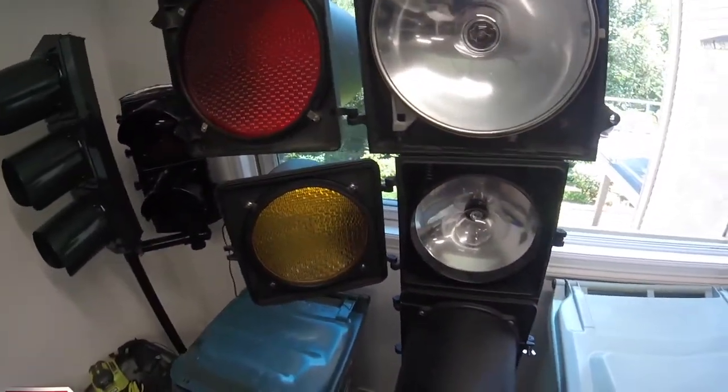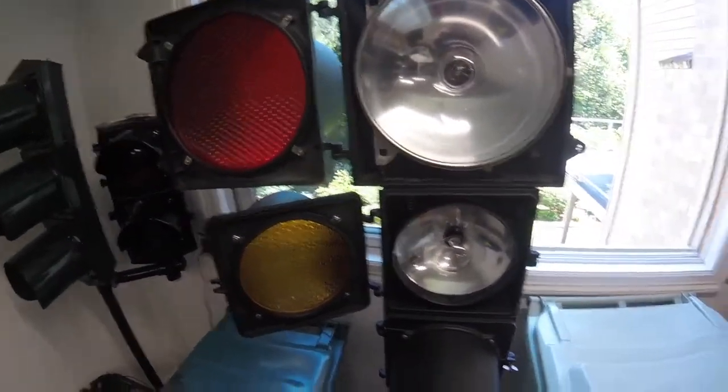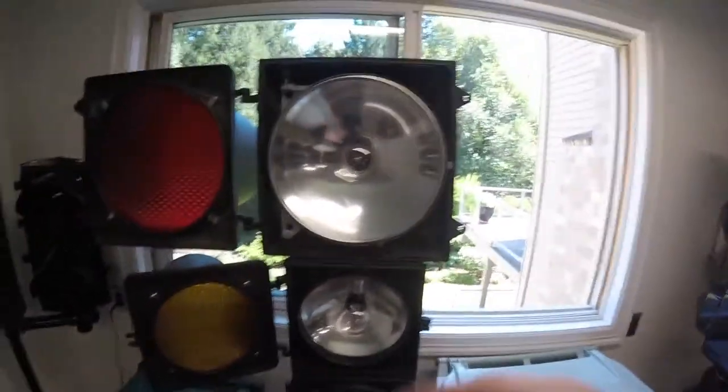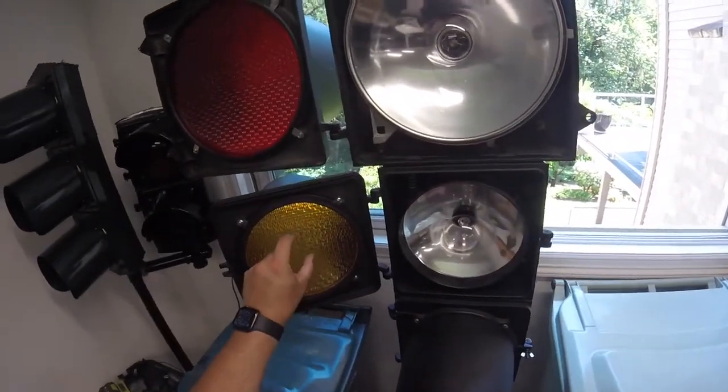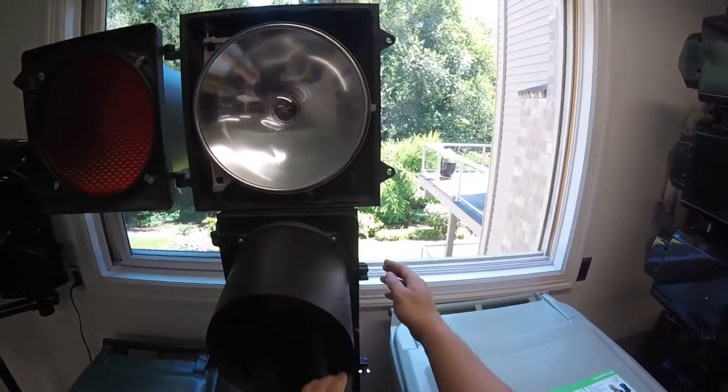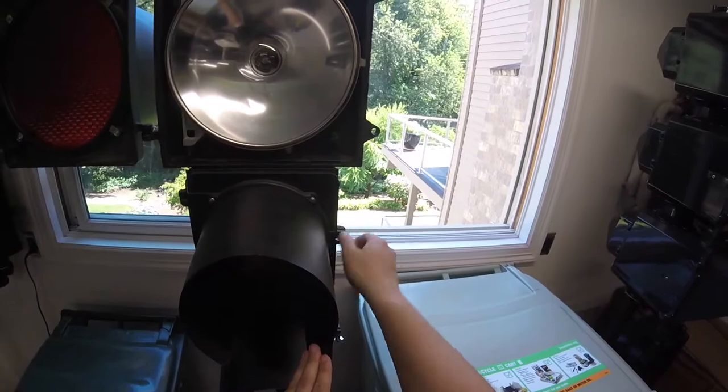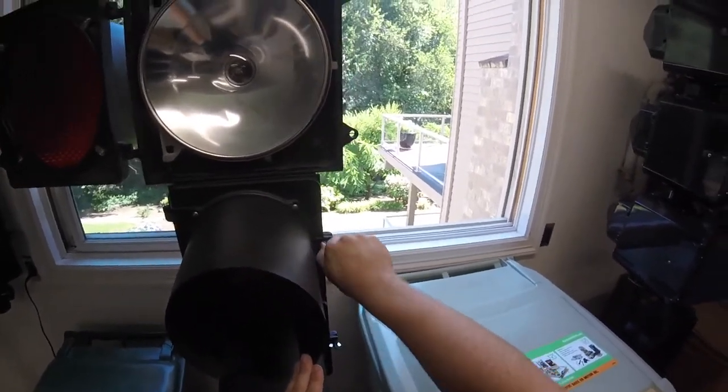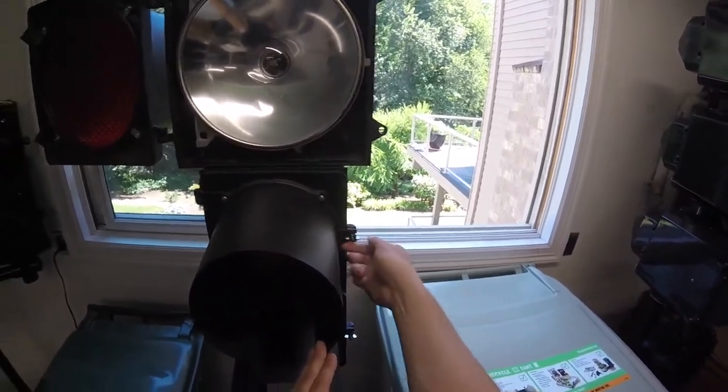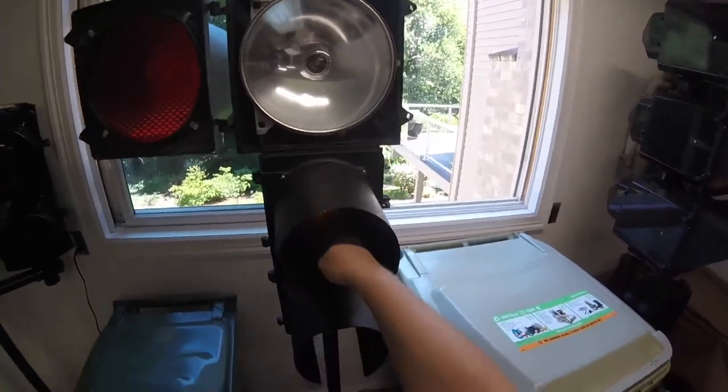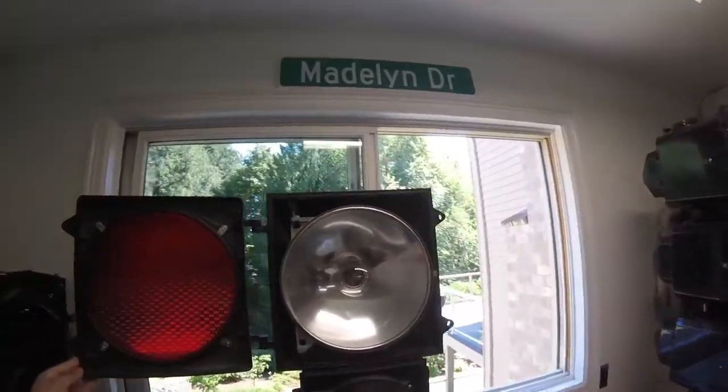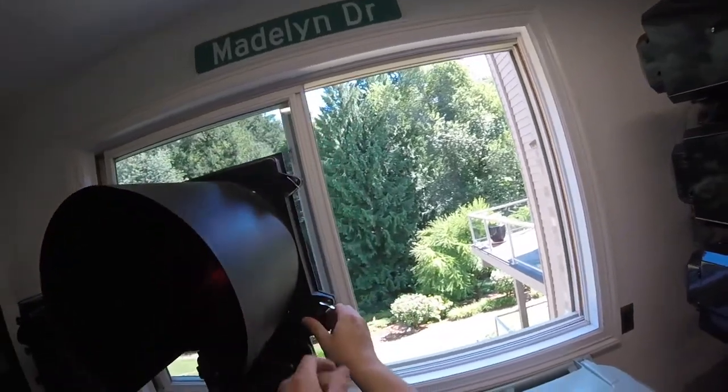When this is closed, that bulb is right up against the inside of this lens. What you used to see is signals that would be on green or red for a very long time, you'd get a big burn mark in the middle. If the agency in charge of maintaining that signal was not very proactive, it would actually go through the lens and you'd be able to see the bulb.